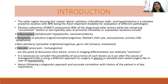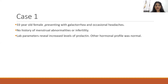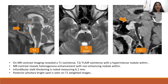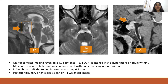Diagnostic approach and accurate correlation with history is of prime importance. Case 1: a 33-year-old female presenting with bitemporal and oppressive headaches, menstrual irregularities with increased levels of prolactin. T2-weighted images show an iso-intense mass with a hyper-intense volume within. On post-contrast, it shows heterogeneous enhancement with non-enhancing areas. The stalk is thickened at approximately 6.1 mm. Posterior pituitary bright spot is preserved on T1 images.